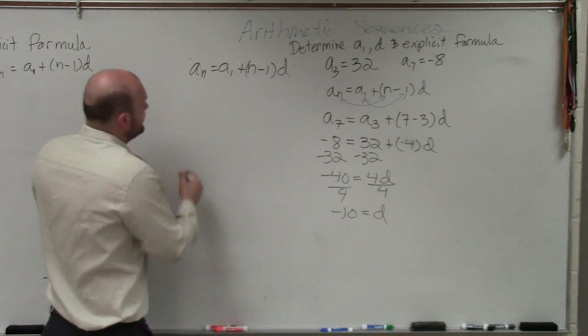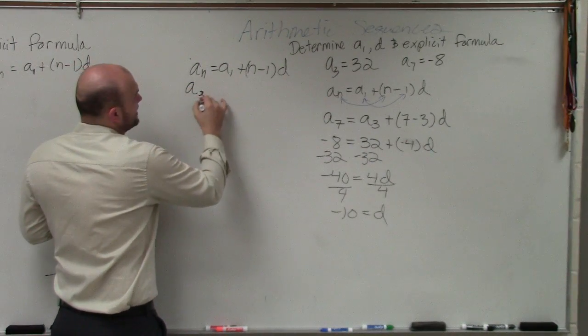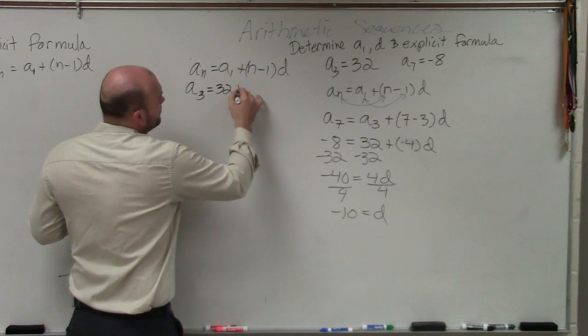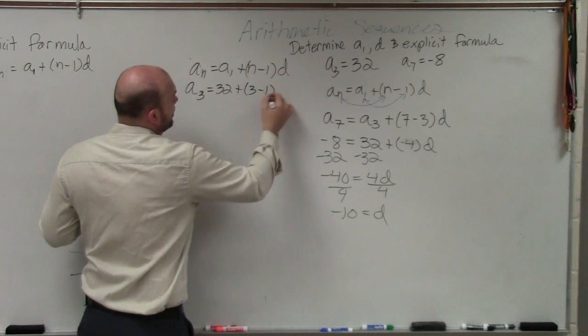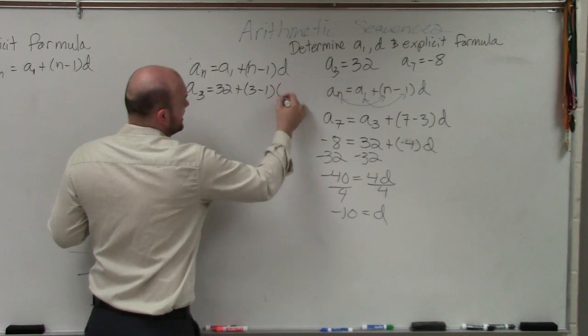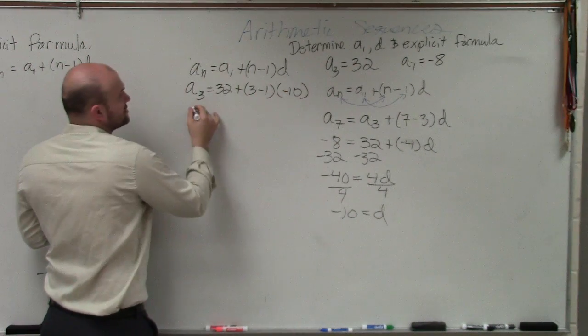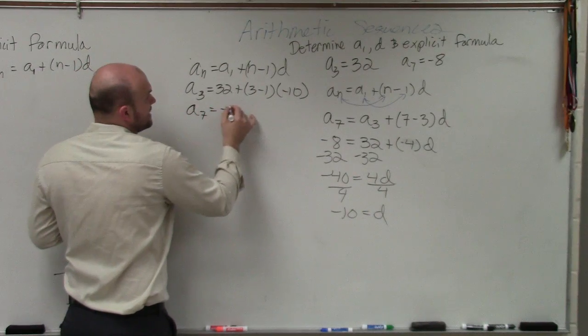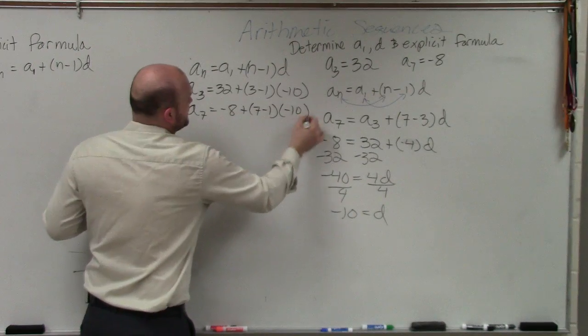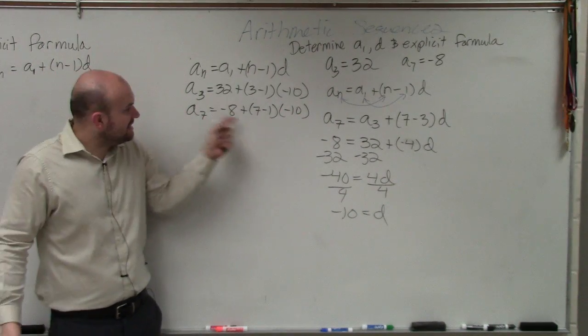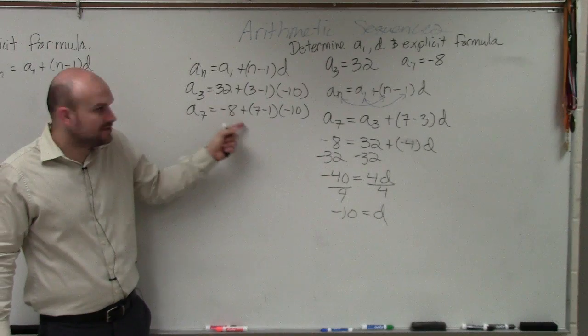So you could do your example like this. A sub 3 equals a sub 1 plus 3 minus 1 times d, which is negative 10. You could also do a sub 7 equals a sub 1 plus 7 minus 1 times negative 10. Do you guys see how there's the difference in these two?